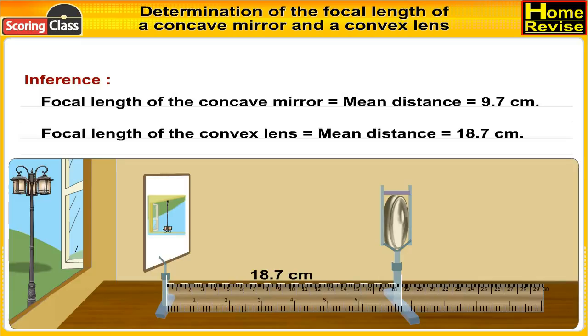Focal length of the convex lens is equal to mean distance, that is 18.7 cm. Thank you.